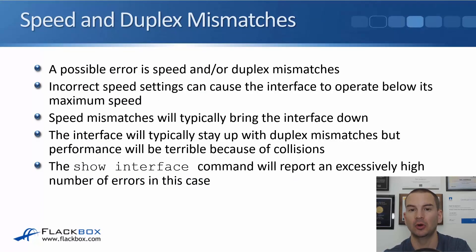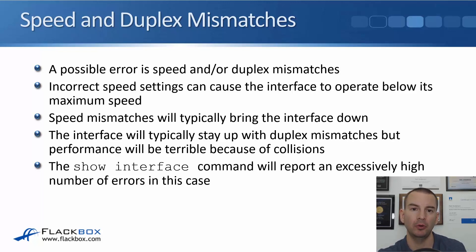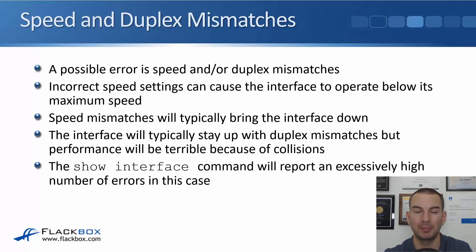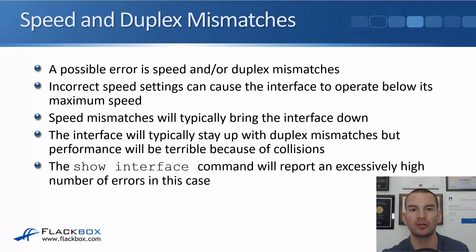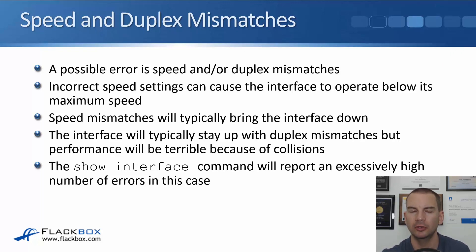A possible error you can have is speed and/or duplex mismatches on your interfaces. Incorrect speed settings can cause the interface to operate below its maximum speed — for example, if one side is set to auto and the other is set manually, or if both sides are set to auto and don't negotiate correctly. A speed mismatch where both sides are manually configured to different speeds will typically bring the interface down. A duplex mismatch typically keeps the interface up but gives terrible performance due to lots of collisions. A show interface command will report a high number of errors in that case, giving you a clue to the problem.